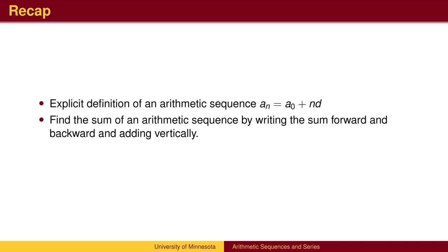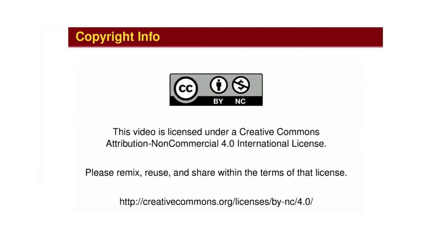To recap, the formula for an arithmetic sequence is similar to the equation of a line. We need to find a starting point a_0 and a rate of change called the common difference. To find the sum of an arithmetic series, write the sum twice, once forward, once backward, and sum vertically.